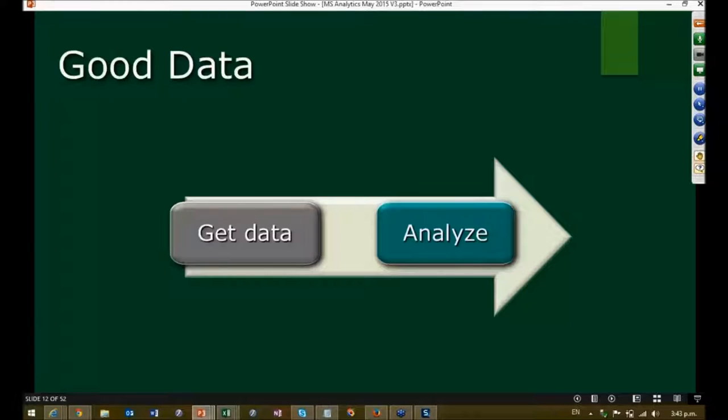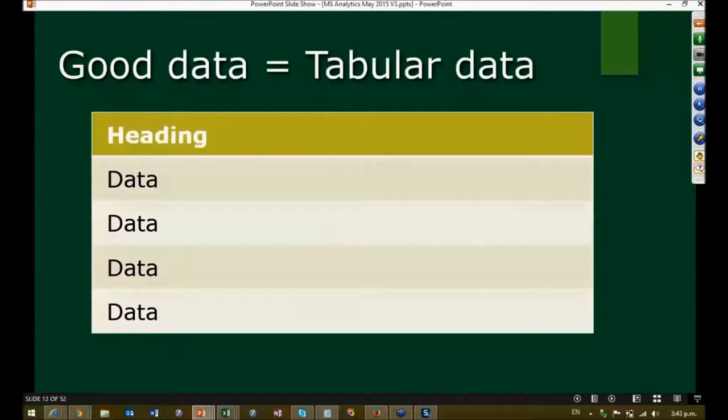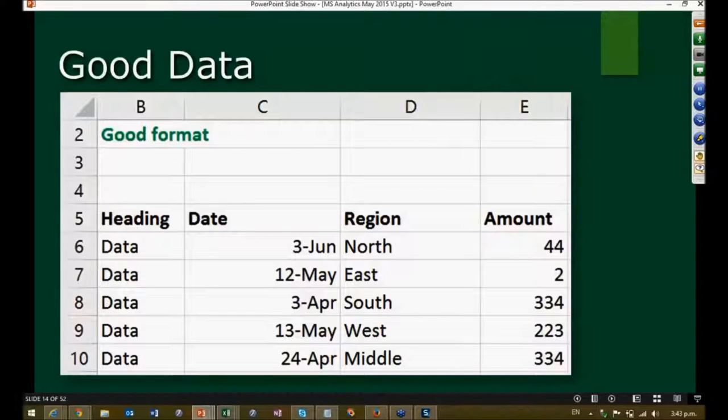It's a very simple definition: if data is like a table, it's called good data—tabular data. Simple example: everything should have a heading followed by data. The data should be consistent in each column. Now this sounds simple, but very often this itself can get spoiled.